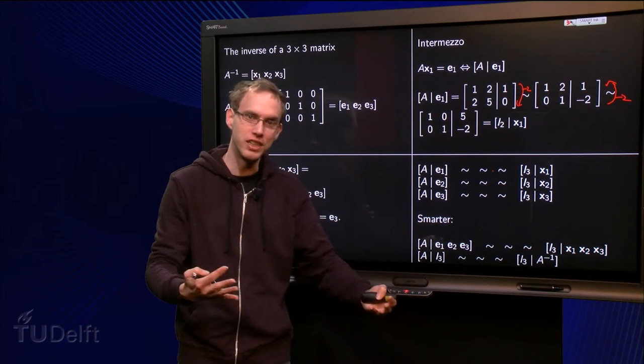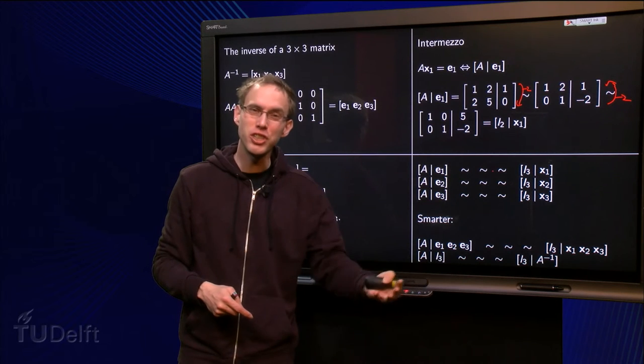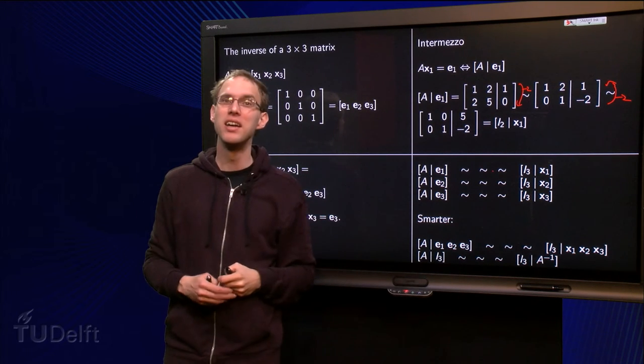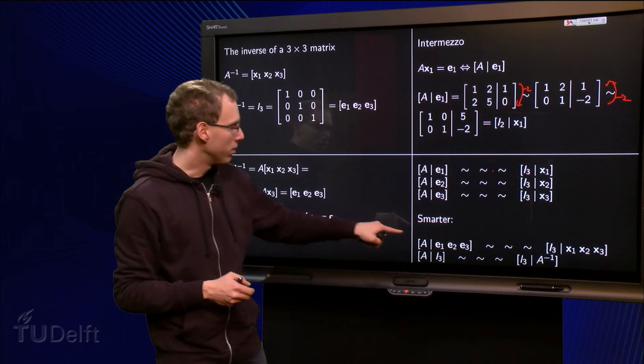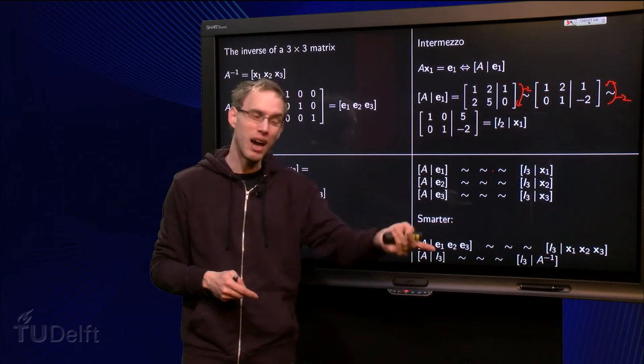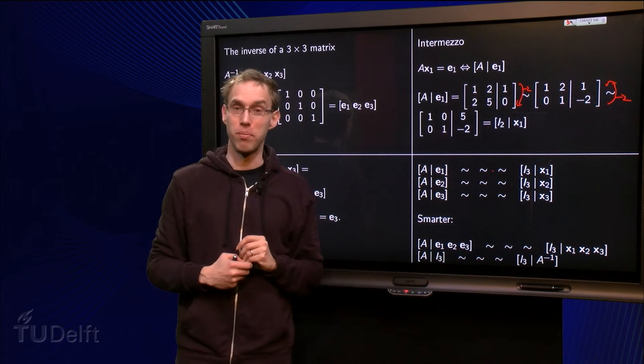Only thing which is changing is the right hand side. So yes, something is changing, but only the right hand side. So the reduction steps will always be the same, because you always have the same A. So we can do this a bit smarter by doing all those row reductions at once at the same time.